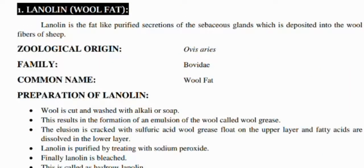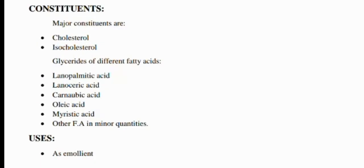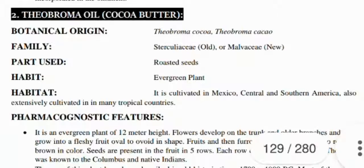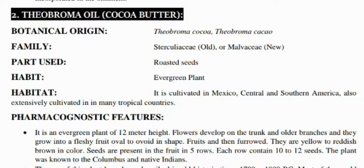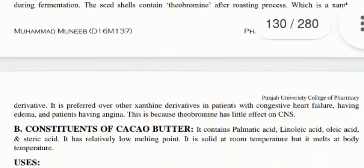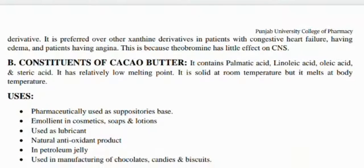Further, we have lanolin, known as Ovis aries, from the Bovidae family, with wool fat as the common name, used as an emollient. We also have theobroma oil, known as Theobroma cacao, from the Malvaceae family, with roasted seeds as the part used. Its uses include suppository base, emollient in cosmetics, soaps and lotions, lubricant, natural antioxidant, and it is used in manufacturing chocolates, candies, and biscuits.